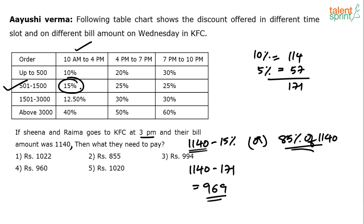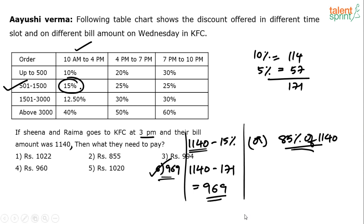969 should be the answer, but it's not there in the options. The options appear to be incorrect. If the question asks for an approximate answer, the closest value would be 960.